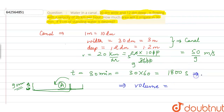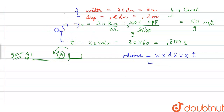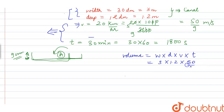The volume of water is given by width × depth × velocity × time, because velocity × time gives the length of water accumulated in a particular time period. So the volume equals 3 × 1.2 × (50/9) × 1800.